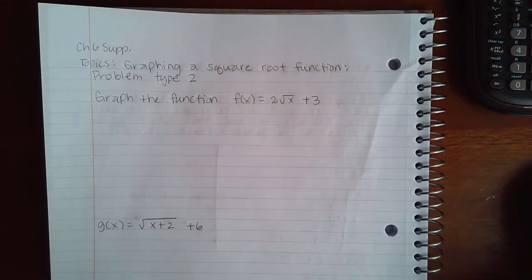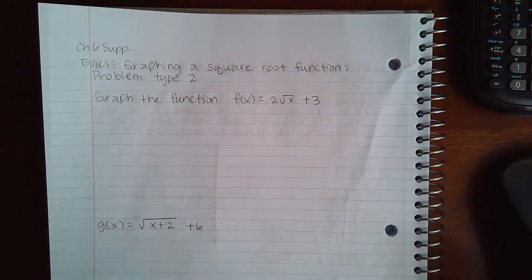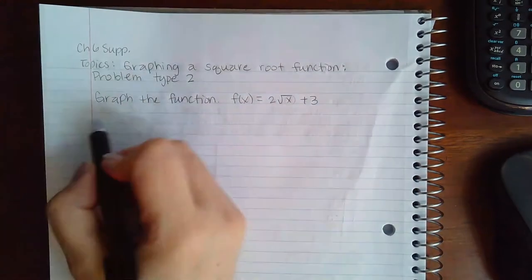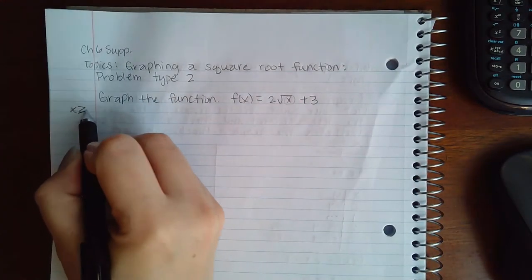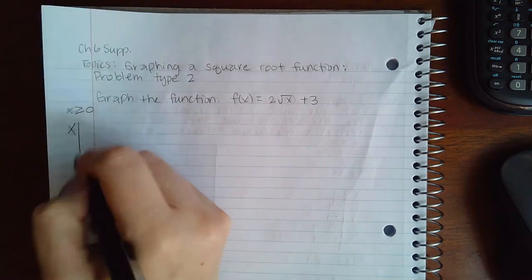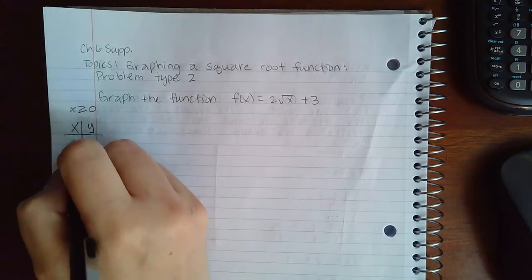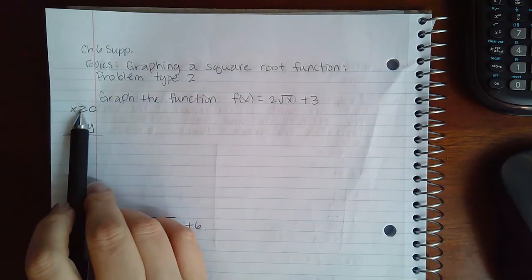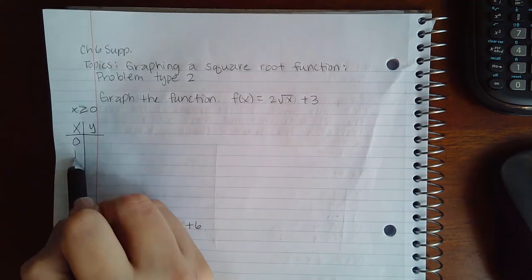Here we have graphing a square root function, problem type 2. Same thing as before - take what's inside and set it greater than or equal to zero. There's nothing to solve there, so my starting point is going to be zero and I'm going to pick x values that are greater than zero, so 1, 2